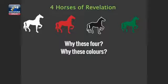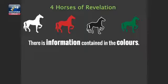Here's my simplest explanation of the book of Revelation, especially the first four horses of the apocalypse. The question is, why these four? Why these colors? I'm going to submit to you that there is information contained in the colors.